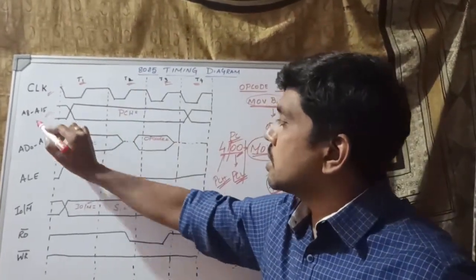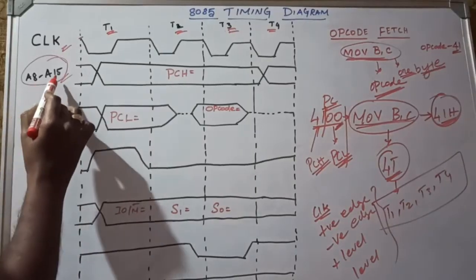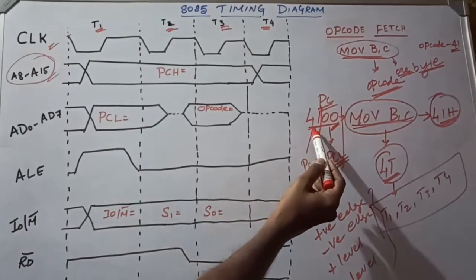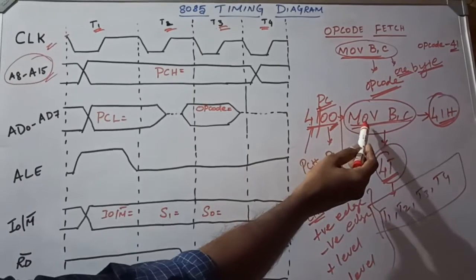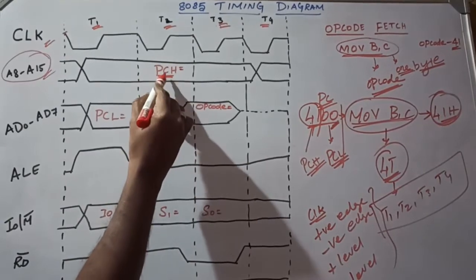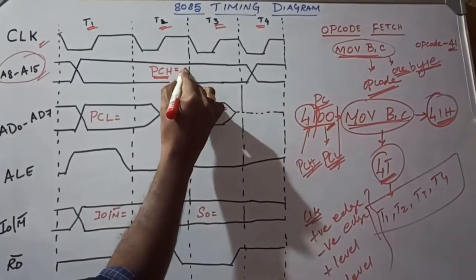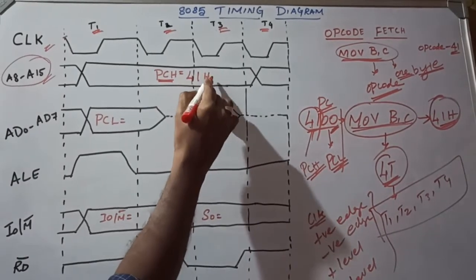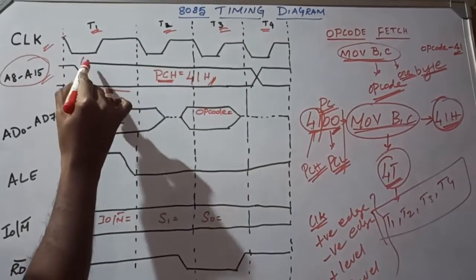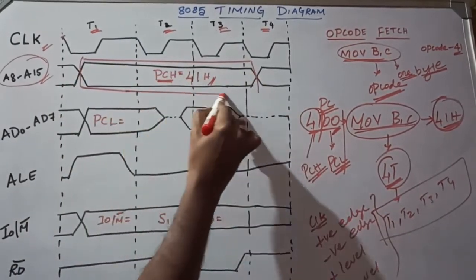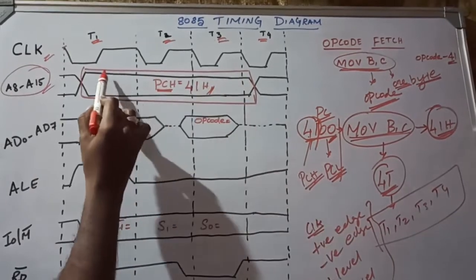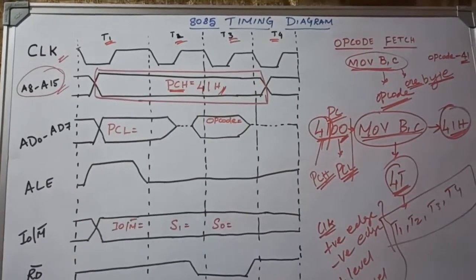The second signal is A8 to A15. It represents the higher order address location for the specified instruction. The memory location is 4100H for MOV B, C. The higher order address location is 41H, so PCH equals 41H. Three time cycles T1 to T3 are required to get the program counter higher order address location.